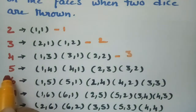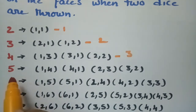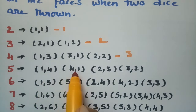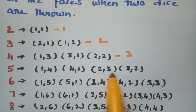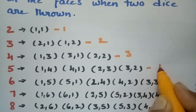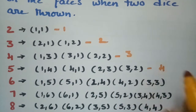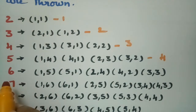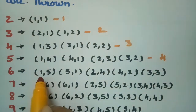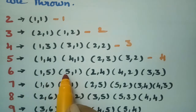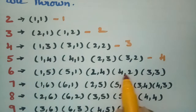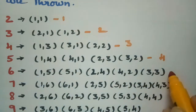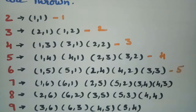For getting five as a sum when two dice are thrown, the outcomes are (1,4), (4,1), (2,3), and (3,2) — total four chances. For getting six as a sum, the outcomes are (1,5), (5,1), (2,4), (4,2), and (3,3) — total five chances.